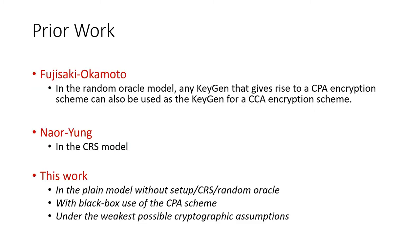Let me describe some prior work in idealized models or with setup that achieves essentially the same objectives, and then discuss how what we aim to do is a little bit different. The Fujisaki-Okamoto transform, in the random oracle model, does show that any key generation algorithm that implies a CPA encryption scheme can also be used as the key generation algorithm for a CCA encryption scheme. However, the Fujisaki-Okamoto transform assumes the existence of the idealized random oracle model, whereas we want to focus on the plain model.